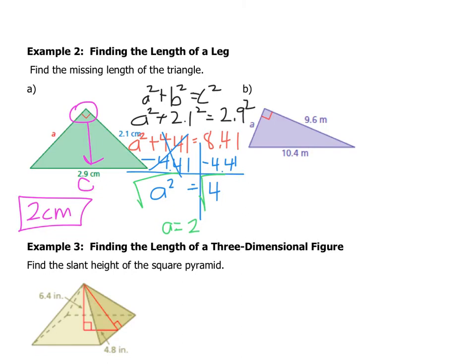One way that you can check kind of that you have the right answer is, remember I told you C has to be the longest side. So your answer has to be less than 2.9. The hypotenuse is always the longest side, so my answer has to be less than 2.9. The steps are exactly the same in letter B, so follow the steps that we just did. Give letter B a shot on your own.